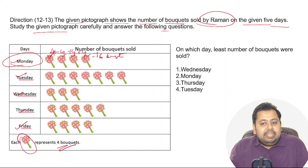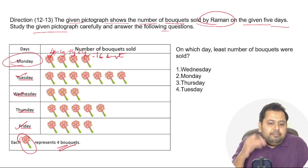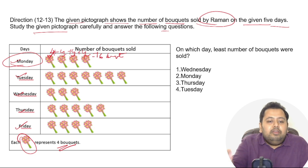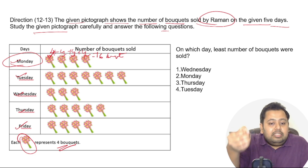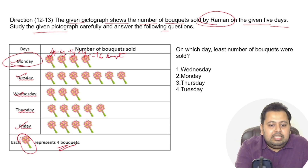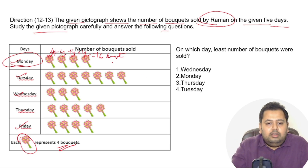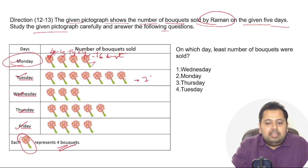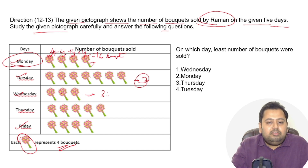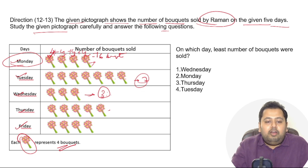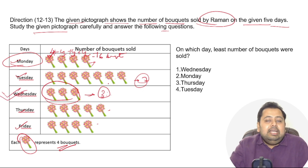The first question asks: on which day was the least number of bouquets sold? Looking at the pictograph, on Tuesday there are seven images — seven times four. On Wednesday there are only three bouquet images — three times four. Thursday has five images and Friday has four. Since three is the lowest, it is on Wednesday that Raman sold the least number of bouquets.